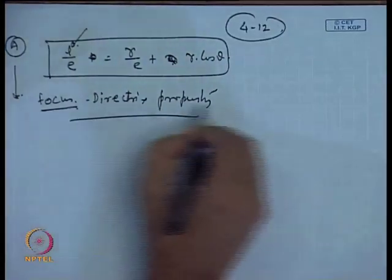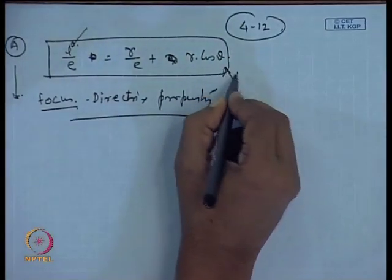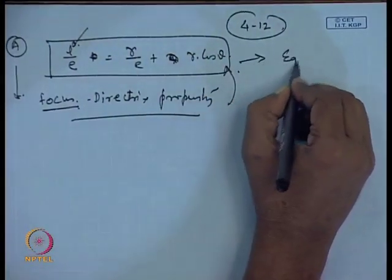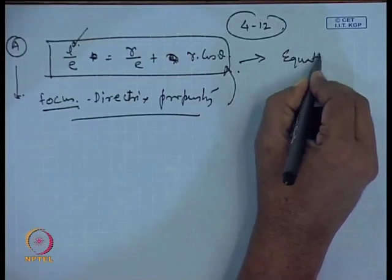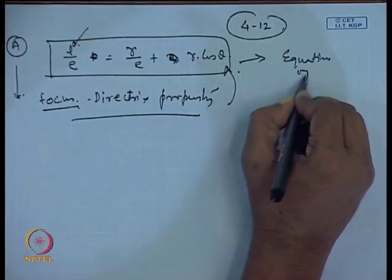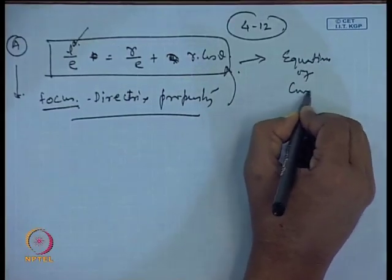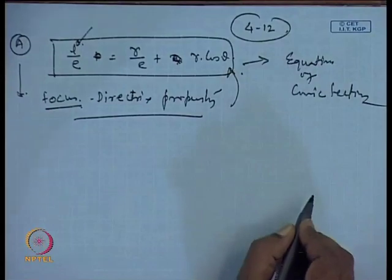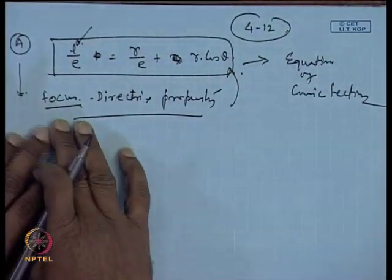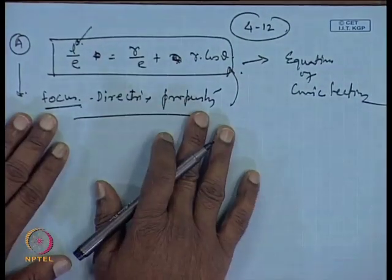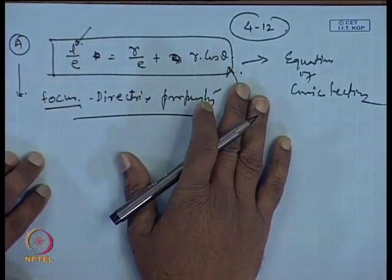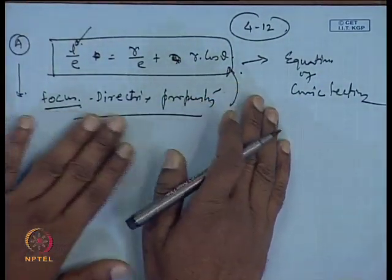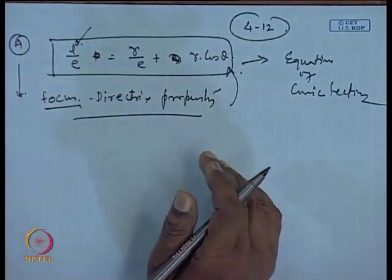We have already proved that l/e equals r/e plus r·cos θ, and this is called the focus-directrix property. The relationship that the distances from the directrix and the focus maintain a constant ratio is expressed in terms of the semi-latus rectum, and this relationship is called the focus-directrix property.